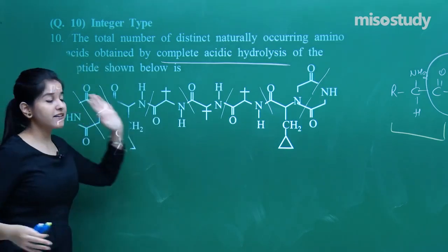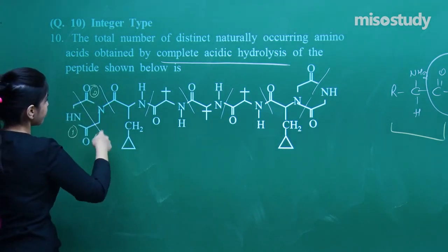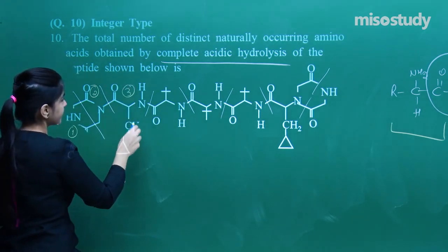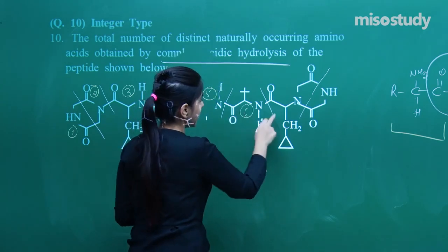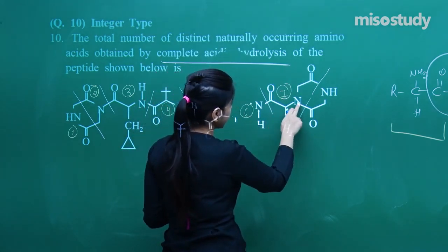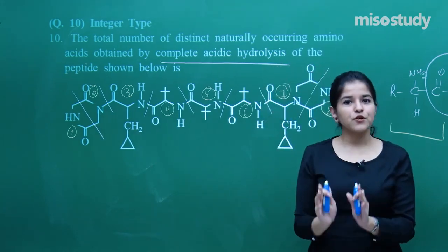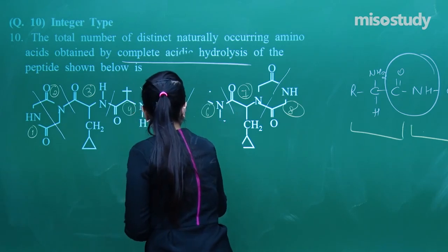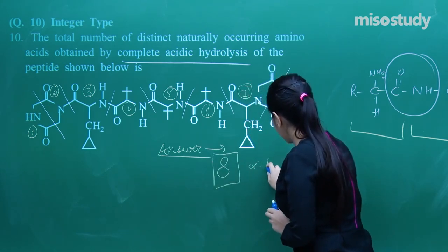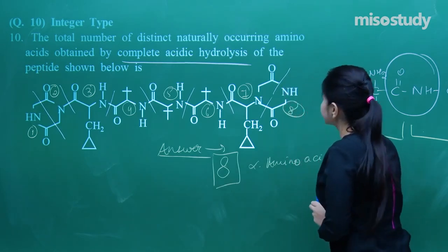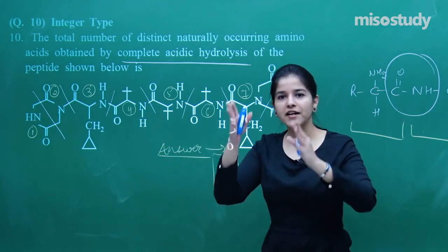Counting all the amino acids obtained: one, two, three, four, five, six, seven, eight. So the total is eight amino acids. The answer to this integer type question is 8. You just need to identify the peptide linkage and break it down — eight alpha amino acids were joined to form this entire peptide.